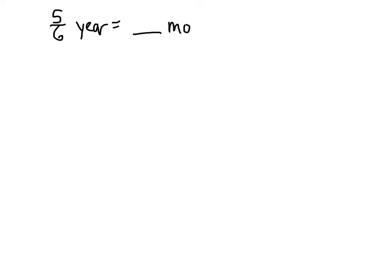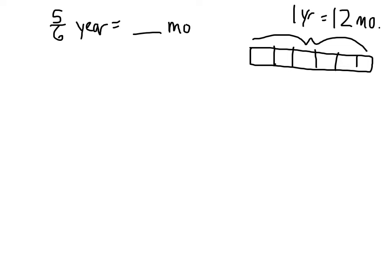The first problem here, I have 5 sixths of a year, is how many months. So if I were to do this with a bar model, I have a bar that was one year. We also know that that is equal to 12 months. And for 5 sixths, there's my sixth. And I want 5 of them. There it is. And that's what I want to find out.